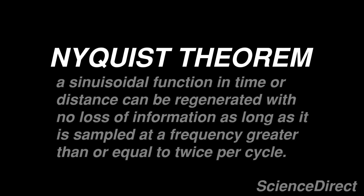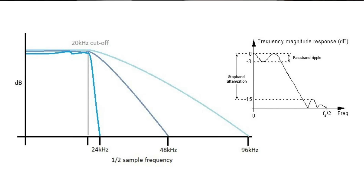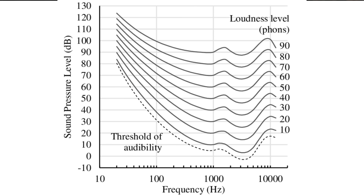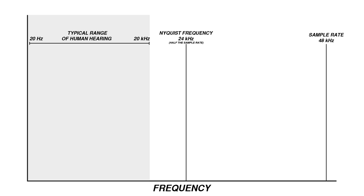The Nyquist theorem states that a waveform can be captured and reproduced with no loss so long as it is sampled at a rate beyond twice per cycle. Therefore, the sample rate determines the highest frequency that can be sampled with no loss. A system with a 48 kHz sample rate can perfectly record and reproduce frequencies up to just below 24 kHz — half the sample rate. Given that human hearing and most audio equipment top out at 20 kHz, a 48 kHz sample rate provides adequate frequency range.